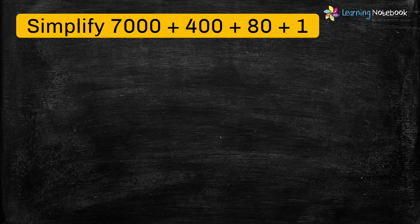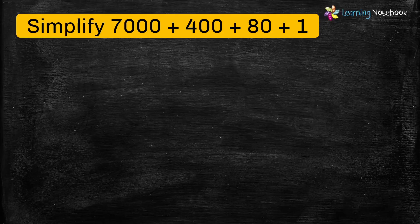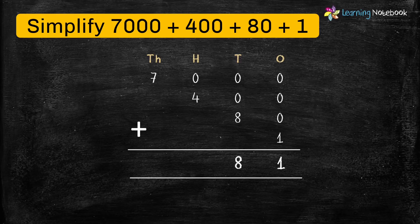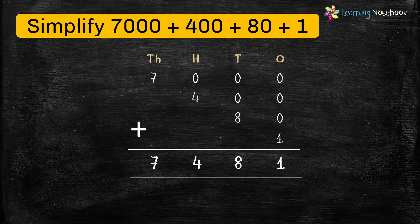The question is: Simplify 7000 plus 400 plus 80 plus 1. We can find this number by writing the numbers given in the expanded form in column form and then adding them. Let's start adding: first, add the digits at 1's place — we get 1. Then add the digits at 10's place — we get 8. Add the digits at 100's place — we get 4. And the digit at 1000's place will be 7. So we get the number 7481.